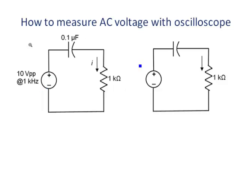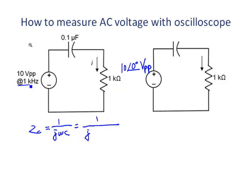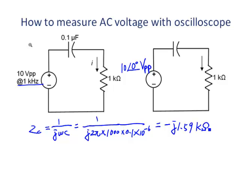The source is 10V peak-to-peak, so I can write 10 at 0 degrees. Notice the voltage is peak-to-peak. The impedance for a capacitor is 1 over jωC. Here the frequency is 1 kHz, so omega is 2π times 1k radians per second, that is 2π times 1000. The capacitance is 0.1 μF, so 0.1 times 10 to the power of negative 6. That gives 1,590 ohms, or negative j1.59 kΩ. The resistor impedance is just the resistance, so 1 kΩ.